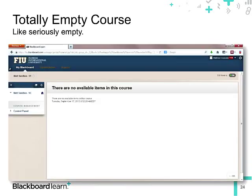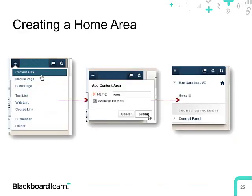Here's my totally empty course. My left-hand course menu is empty and there are no available items. The file manager is totally empty too. The first thing I'll do is create a home area. I'll hit the plus over the course menu, making sure I have edit mode on, and choose Content Area. I'm going to call it Home and make it available to students. And just like that, I have my first bit of content.